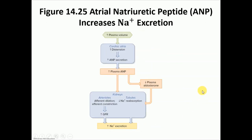Atrial natriuretic peptide (ANP) is a peptide hormone made by the atrium of the heart — the name tells you what it does: it increases sodium excretion in urine. When plasma volume increases and distends the atria, stretch receptors stimulate ANP secretion. ANP dilates the afferent arterioles while constricting the efferent, increasing GFR. It also decreases sodium reabsorption in the tubules directly and indirectly by decreasing aldosterone levels, ultimately increasing sodium excretion.